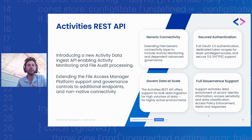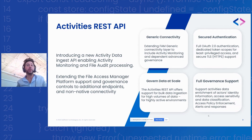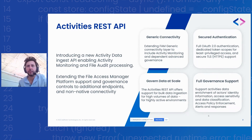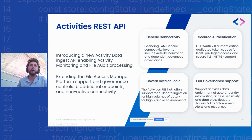With this new activity REST API, we're enabling connectivity layers that don't currently support activity monitoring natively to be extended. We want to keep everything secured, so this endpoint — which ingests activities from third-party sources — leverages full OAuth 2.0 authentication with dedicated tokens that have a specific scope, so you can restrict access to a specific application.